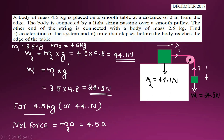Given: m1 equals 2.5 kg and m2 equals 4.5 kg. The weight W2 equals m2 times g equals 4.5 times 9.8 equals 44.1 Newton. The weight W1 equals m1 times g equals 2.5 times 9.8 equals 24.5 Newton.